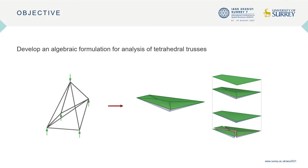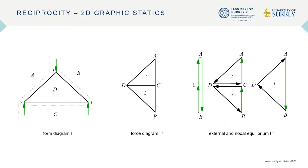Before talking about reciprocity in polyhedral graphic statics, let's quickly remind how reciprocity in 2D graphic statics works. In 2D graphic statics, the faces a to d of the form diagram are reciprocal to the vertices a to d of the force diagram, and vice versa. Each edge in the form is reciprocal to an edge in the force, and the magnitude of the force in the truss member is proportional to the length of its reciprocal edge in the force diagram.